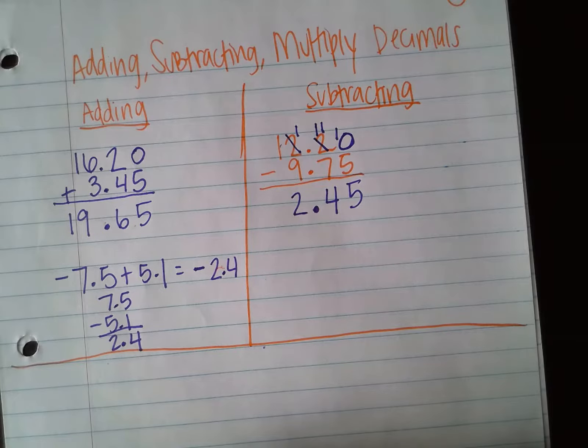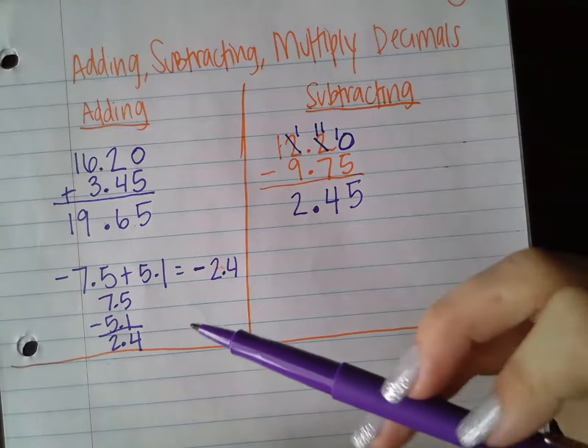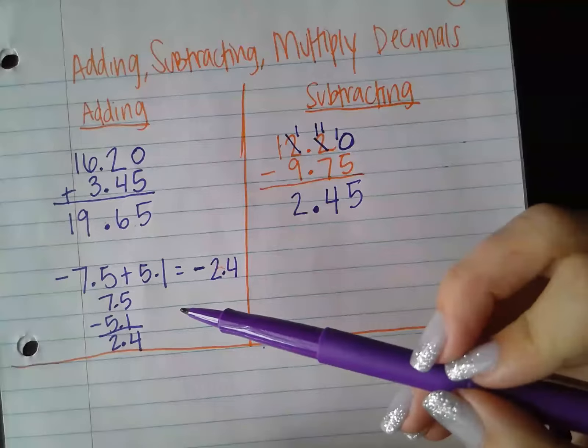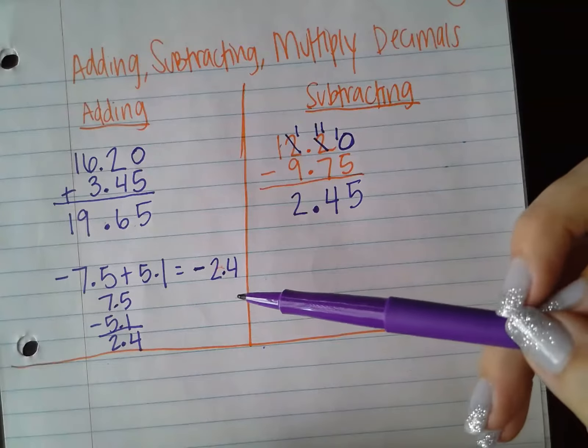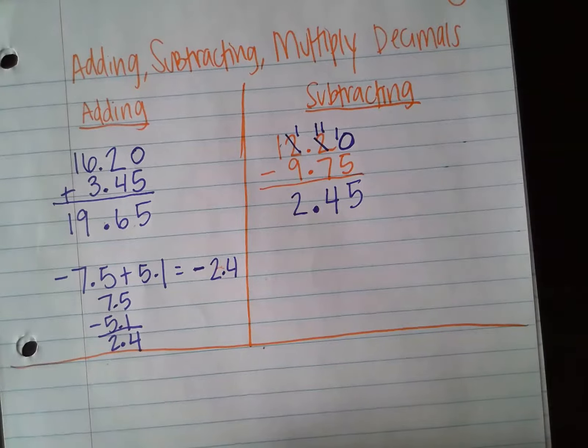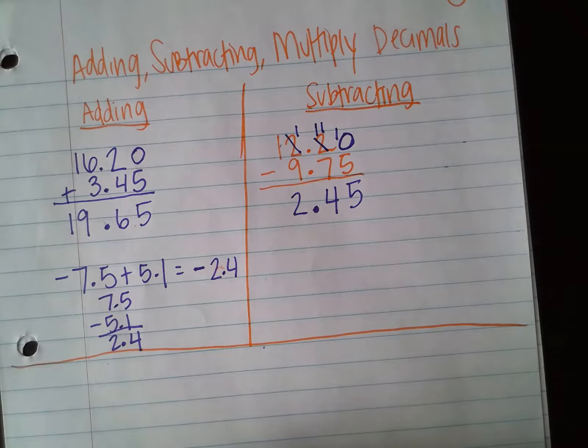So it's just really important. Like with adding, we line up our decimal places. In this case, with subtracting, we kind of have to remember those borrowing rules. Now, in the adding video, I gave you an example of a negative plus a positive. I'm going to give you an example of a positive and a negative decimal subtraction problem.